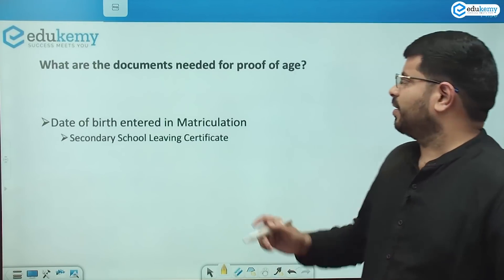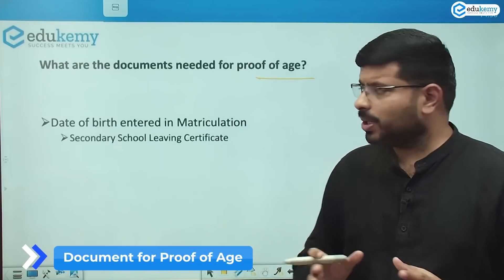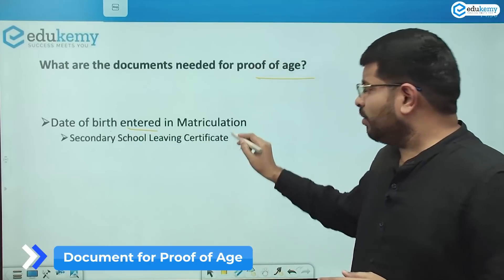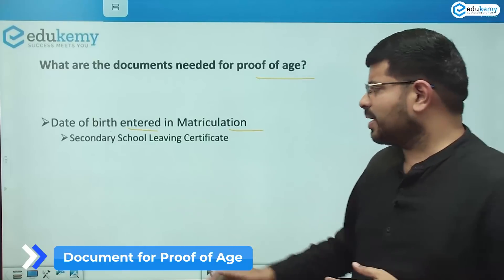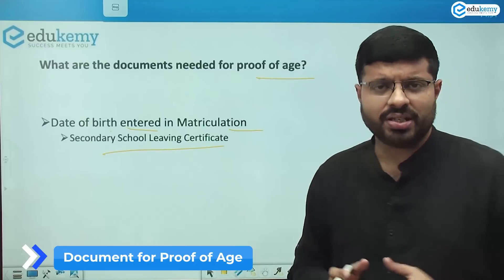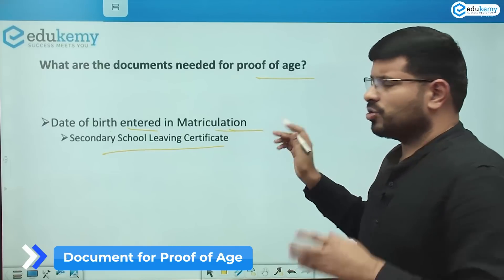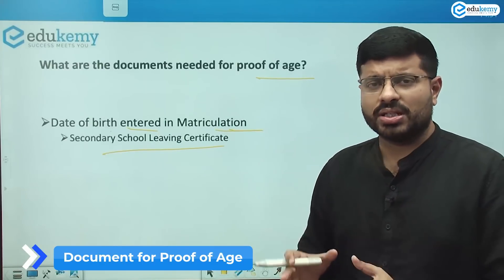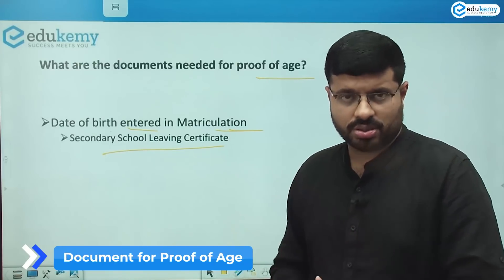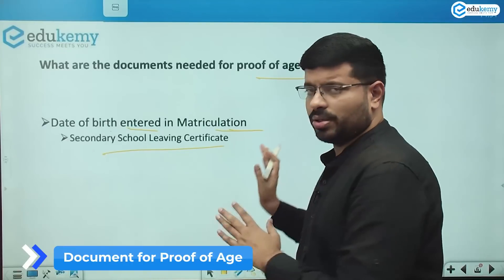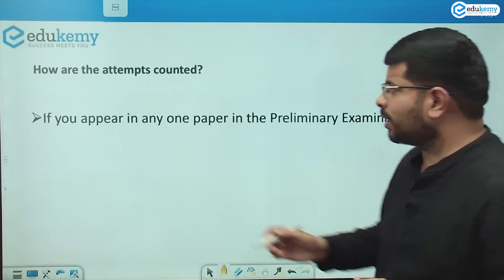Another common query concerns the documents needed as proof of age. The date of birth entered in the matriculation certificate is the accepted proof. This certificate is known by different names across the country — Secondary School Leaving Certificate, SSC certificate, or any certificate related to matriculation. The date of birth mentioned in the 10th class certificate will be the base; no municipal certificate or other documents are accepted.